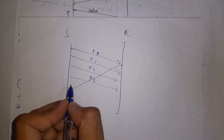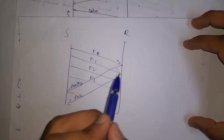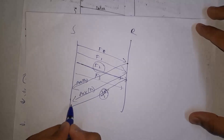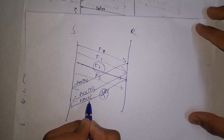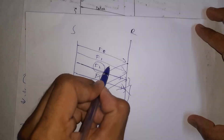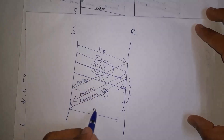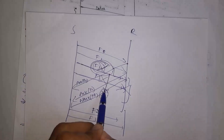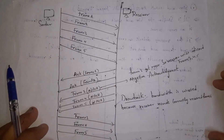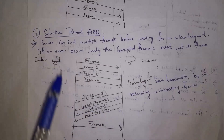For example, in Go-Back-N ARQ sender can send 4 frames at a time. Receiver successfully receives frame 0 and sends acknowledgement for frame 0. Similarly, receiver successfully receives frame 1 and sends acknowledgement for frame 1. Receiver receives frame 2, but frame 2 contains errors, so receiver sends negative acknowledgement (NAK) for frame 2. Even though frame 3 is received successfully, receiver will discard all frames from the error-occurred frame — so receiver discards frame 2 and frame 3. Sender will again send frame 2 and frame 3. This is all about Go-Back-N ARQ.